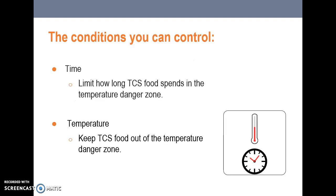Although it is important to recognize all of the FAT-TOM conditions, the two that you can most directly control are time and temperature. You limit how long foods spend in the temperature danger zone — 41 degrees to 135 degrees Fahrenheit — and you keep foods out of that danger zone as much as possible. We'll talk in later chapters about the entire flow of food and how to control both time and temperature to limit bacterial growth.